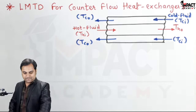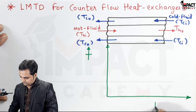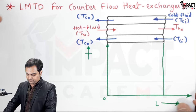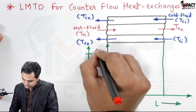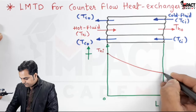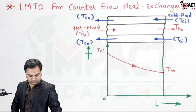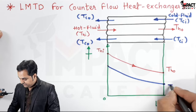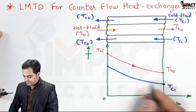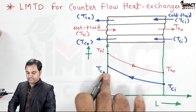Just below this heat exchanger I'll draw the temperature profile along the length of the heat exchanger. The hot fluid temperature goes on reducing continuously and reaches a temperature of Tho at exit. For the cold fluid, it is entering at temperature Tci towards the right, and as it moves along the length of the heat exchanger it gains heat from the hot fluid, so the temperature rises and finally reaches Tco at exit.